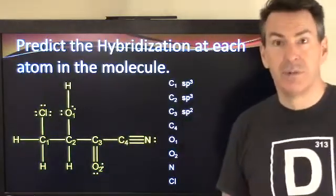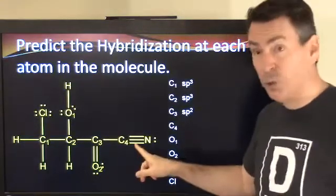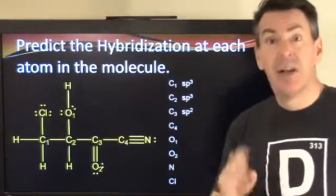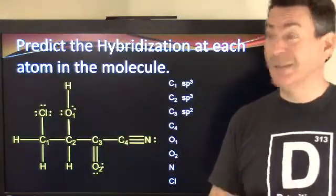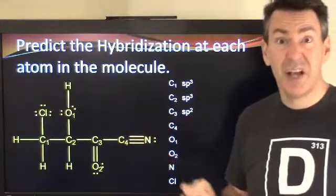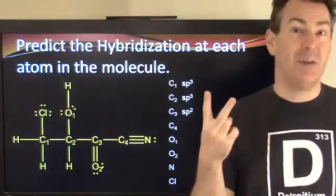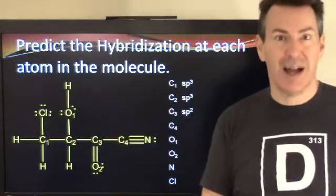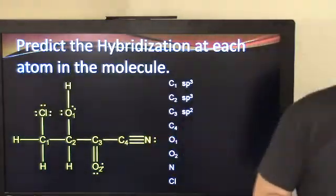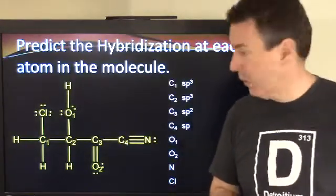How about carbon number four? You've got the triple bond — that's one area — and the single bond here — that's the second area. No other bonds, no lone pairs. Just two areas, so you need an S orbital and a P orbital. SP hybridization for carbon number four. You don't usually put any numbers when there's just one of something.